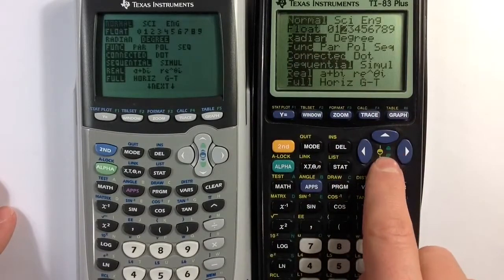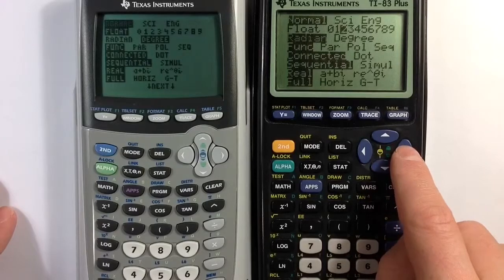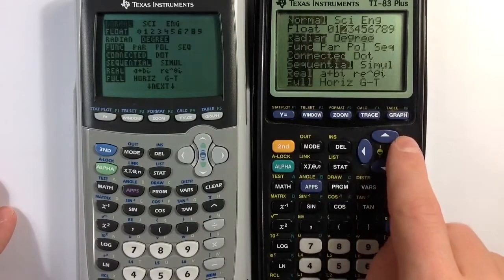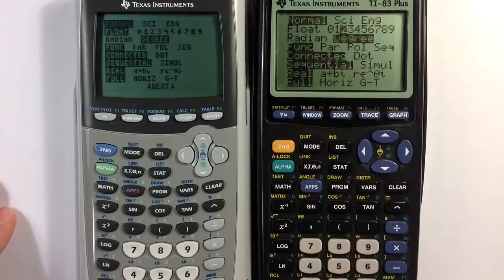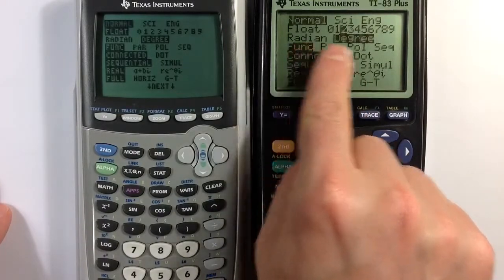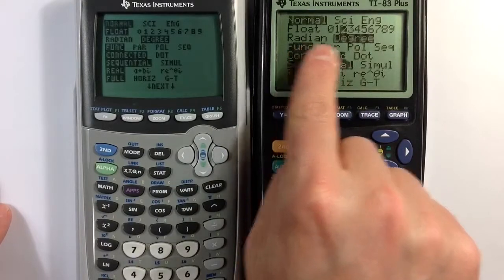Another part of the mode menu worth mentioning is the difference in radians and degrees. These are two different ways to measure angles. So if you're in a trigonometry course or a geometry course, you may want to be careful whether you want to measure angles in radians or degrees.